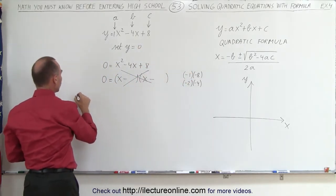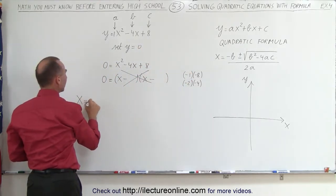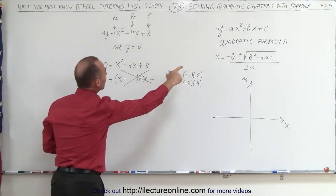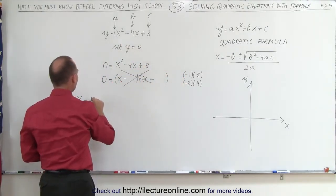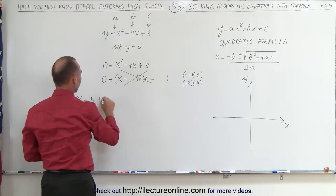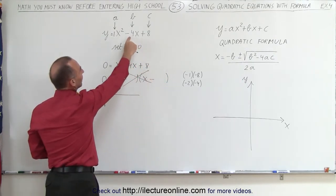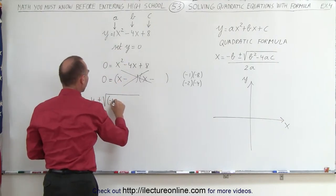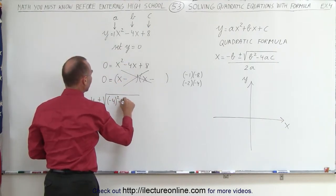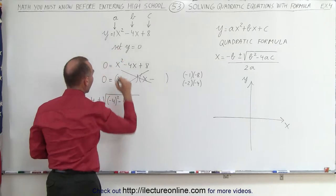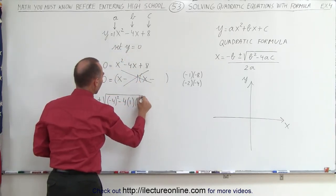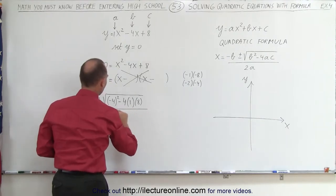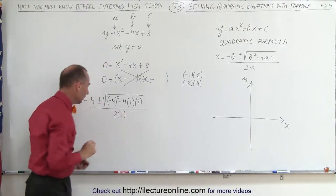And then it says that the solution to the quadratic equation, x is equal to negative b. Since b is negative 4, negative b would be a positive 4 plus or minus the square root of b squared. That would be negative 4 squared minus 4 times a times c, which is 8, all divided by 2 times a. And a is, of course, 1.